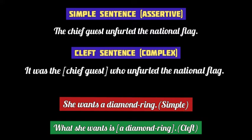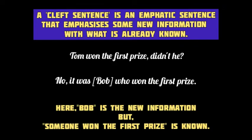It was the chief guest who unfurled the national flag. The two clauses of this cleft sentence are 'It was the chief guest' and 'who unfurled the national flag.' So we understand that in a cleft sentence, some new information is emphasized along with what is already known.